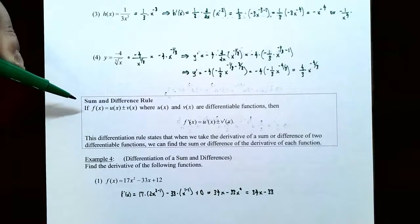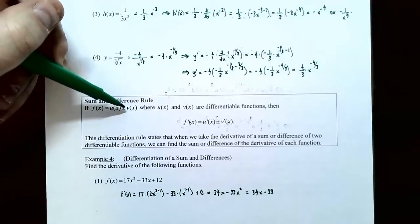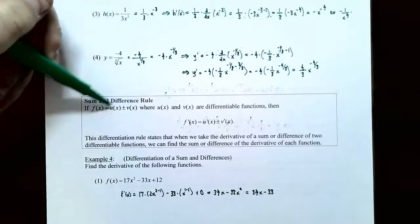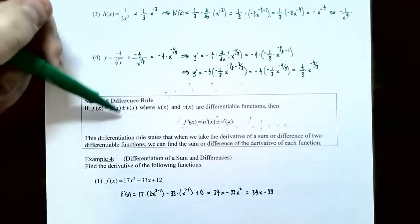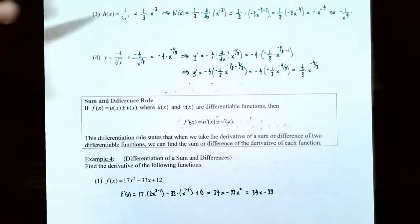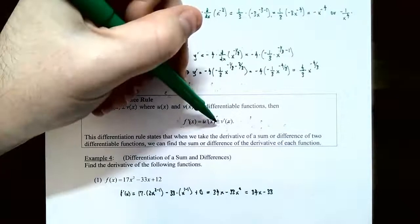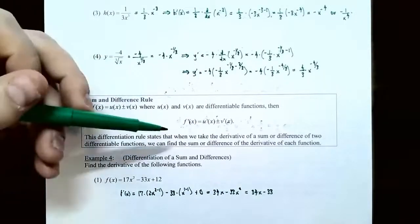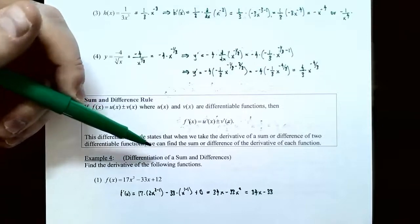The last rules we're going to talk about in this video are the sum and difference rules. This helps us find the derivative of a sum or a difference of two or more functions. If f of x equals one function plus or minus another function — u of x and v of x being differentiable functions — then f prime of x equals u prime plus or minus v prime, keeping the sign between the two. You can take the derivative of each one and keep the sign between them.